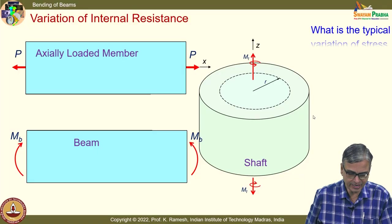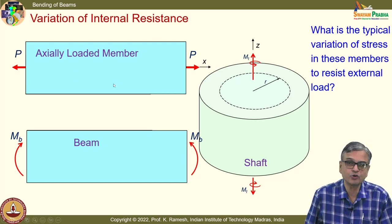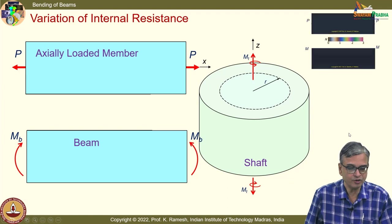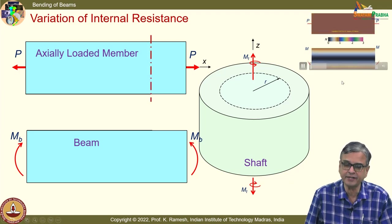The main focus of this course is to look at what is the typical variation of stress in an axially loaded member, in a beam subjected to pure bending, and a shaft subjected to pure torsion. We have done this based on inference of photoelastic fringes, at least for axial loading and bending.